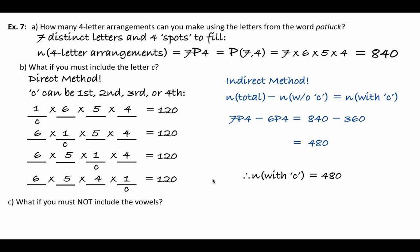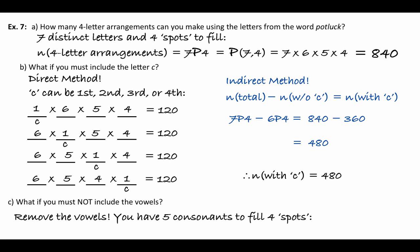What if you do not want to include any vowels at all? Remove the vowels — we only have five consonants left, and we want to put those five consonants into four spots. That's 5P4, which is 120.